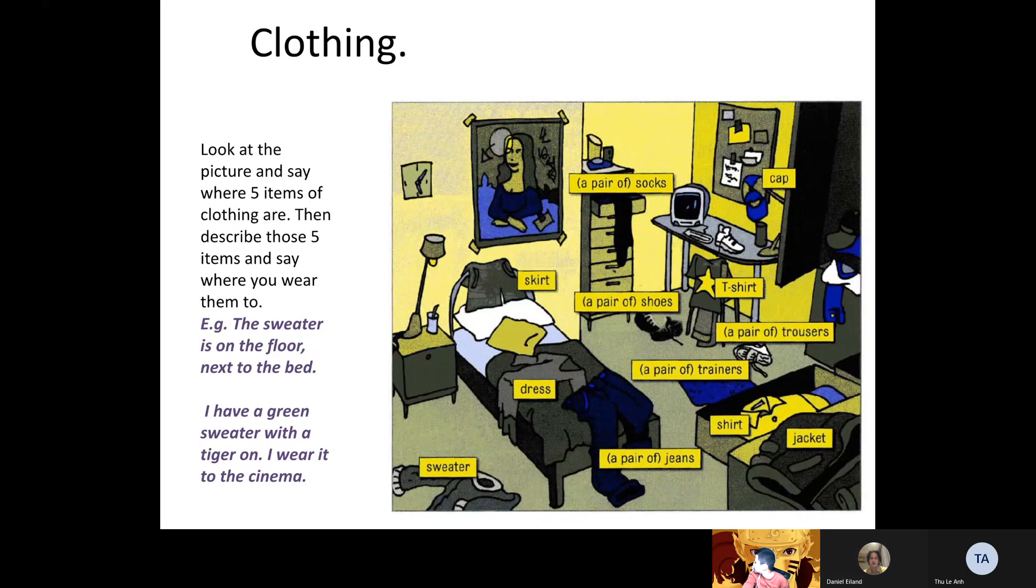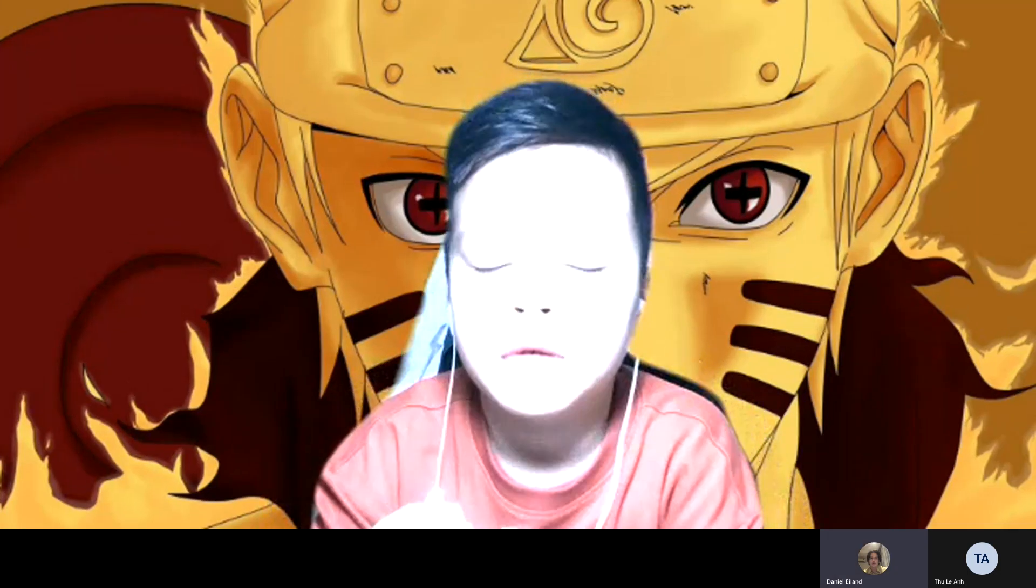And where do you wear your yellow and blue jacket? Do you wear it to Aeon Mall, to Aeon? Yes. Okay, can you say the full sentence please? I wear... I wear... I wear yellow and blue... blue jacket... in Aeon. Okay, there we go. You're finished with your test. Very good.